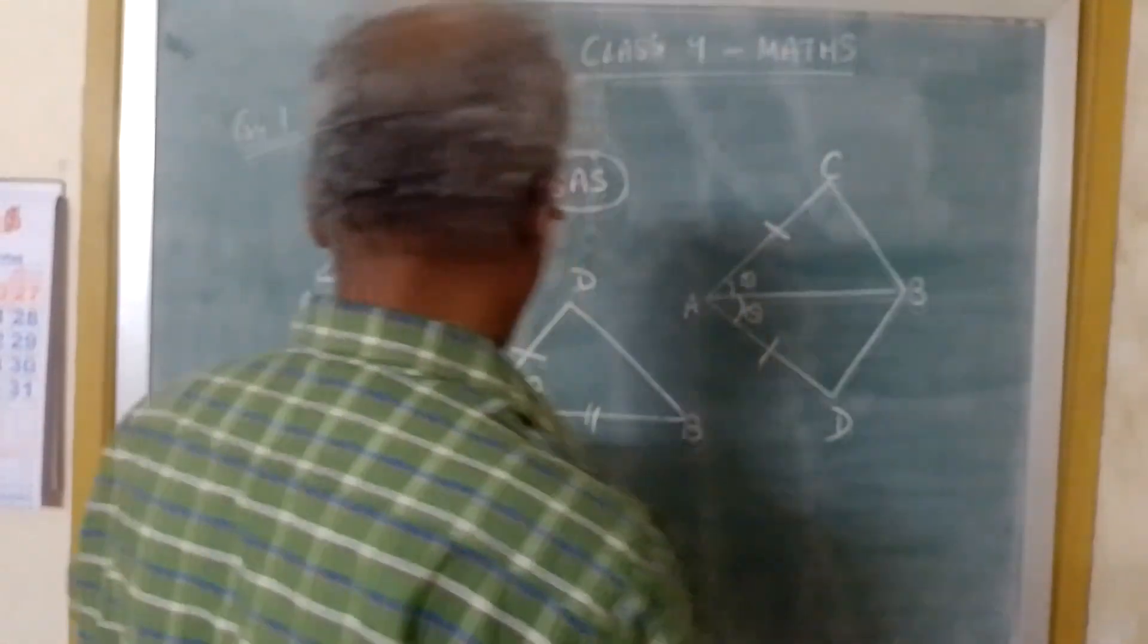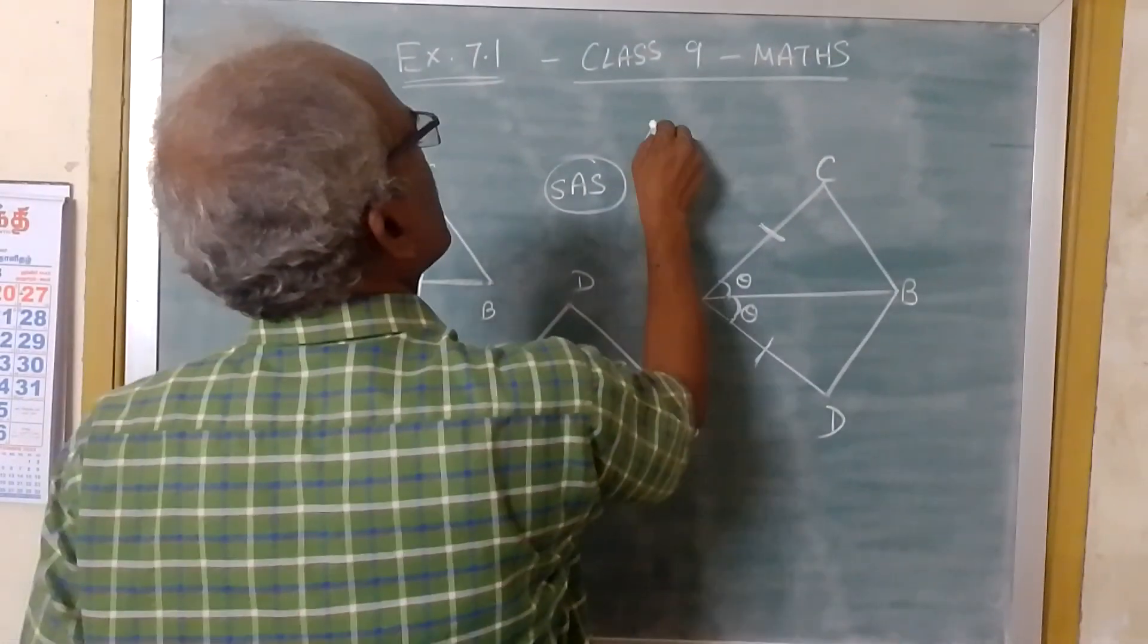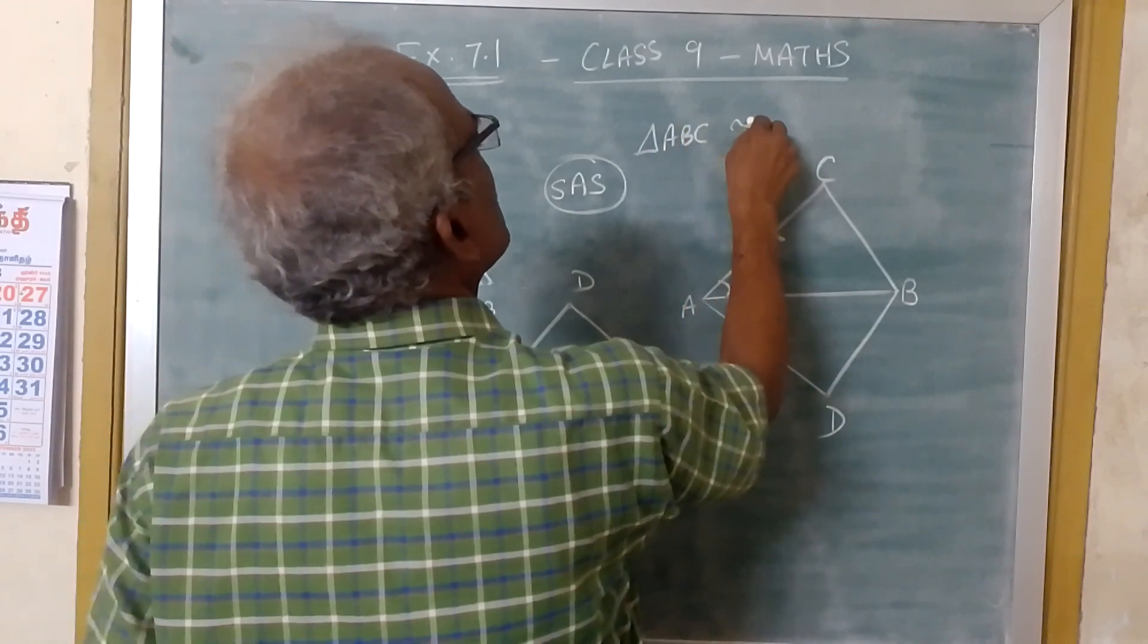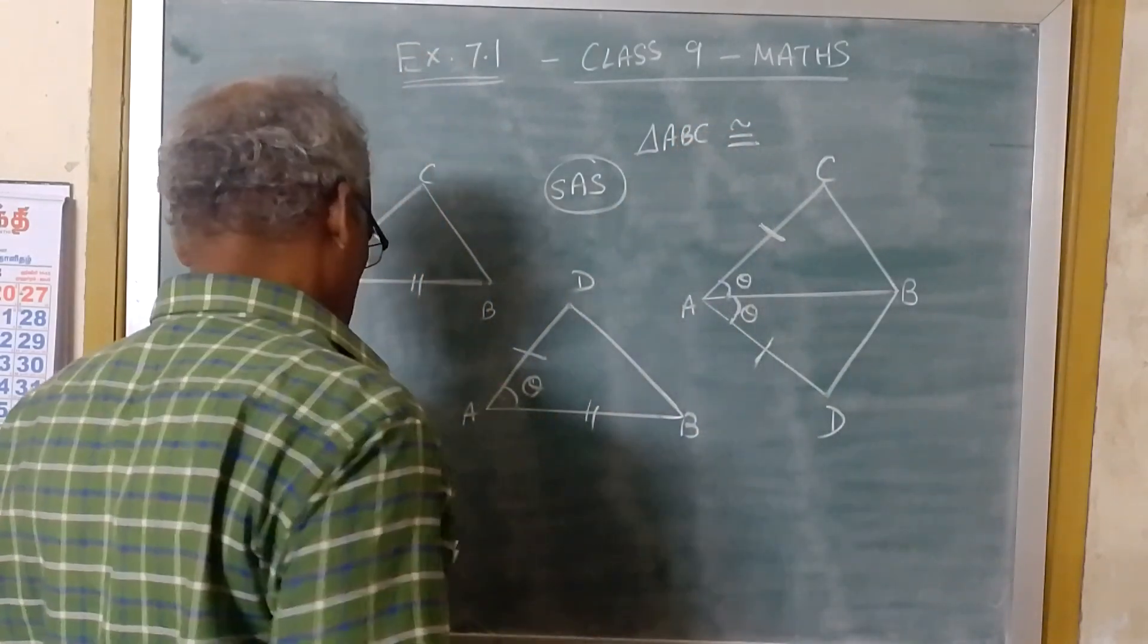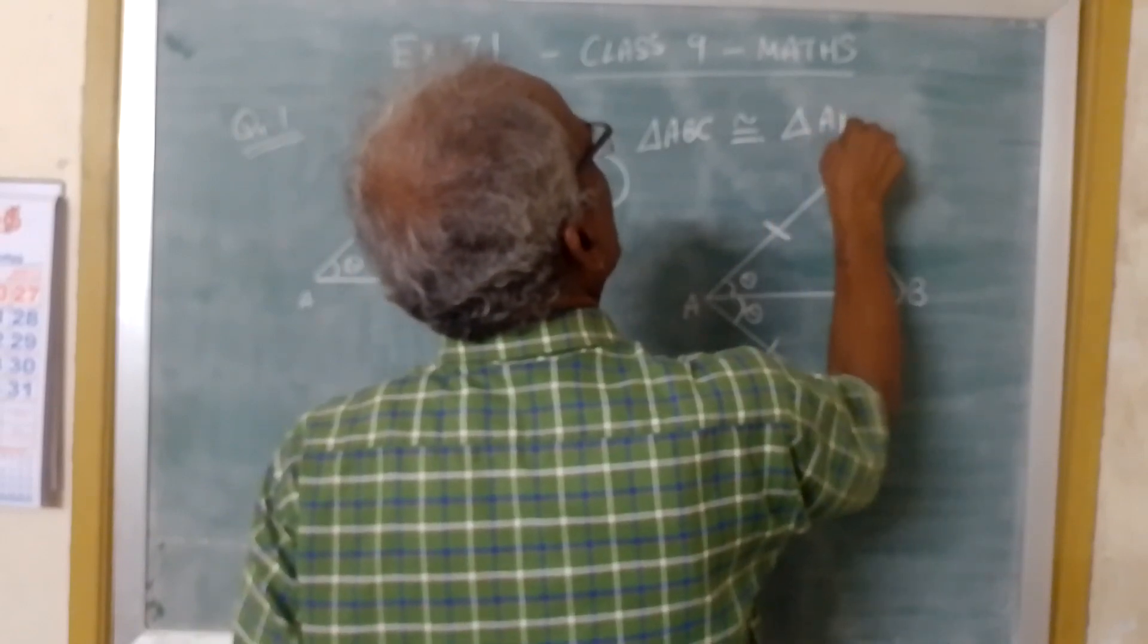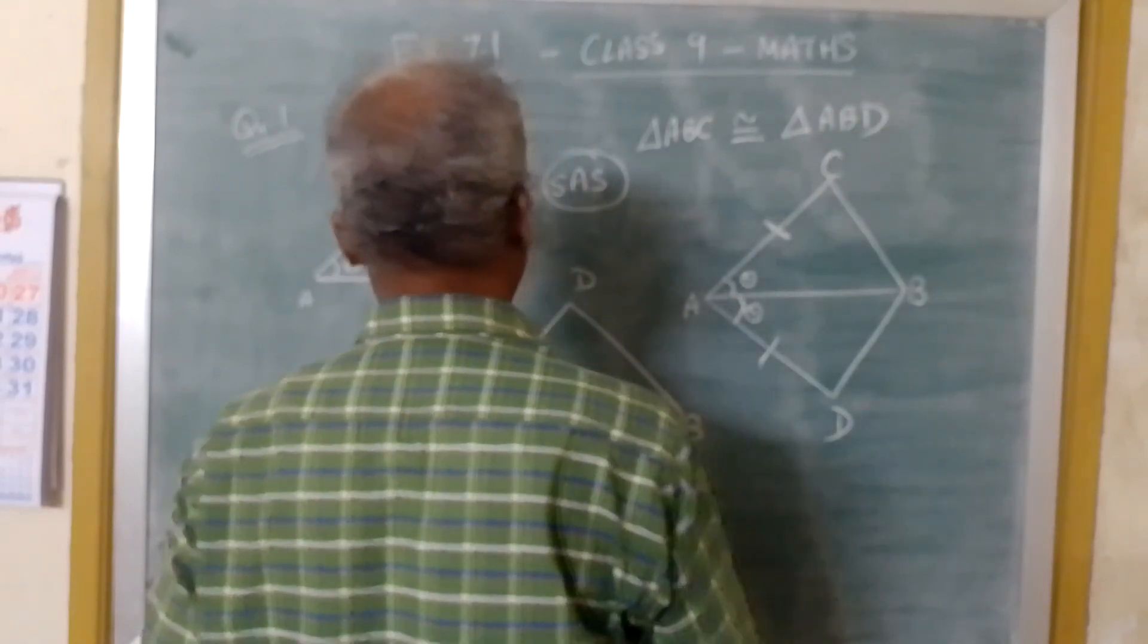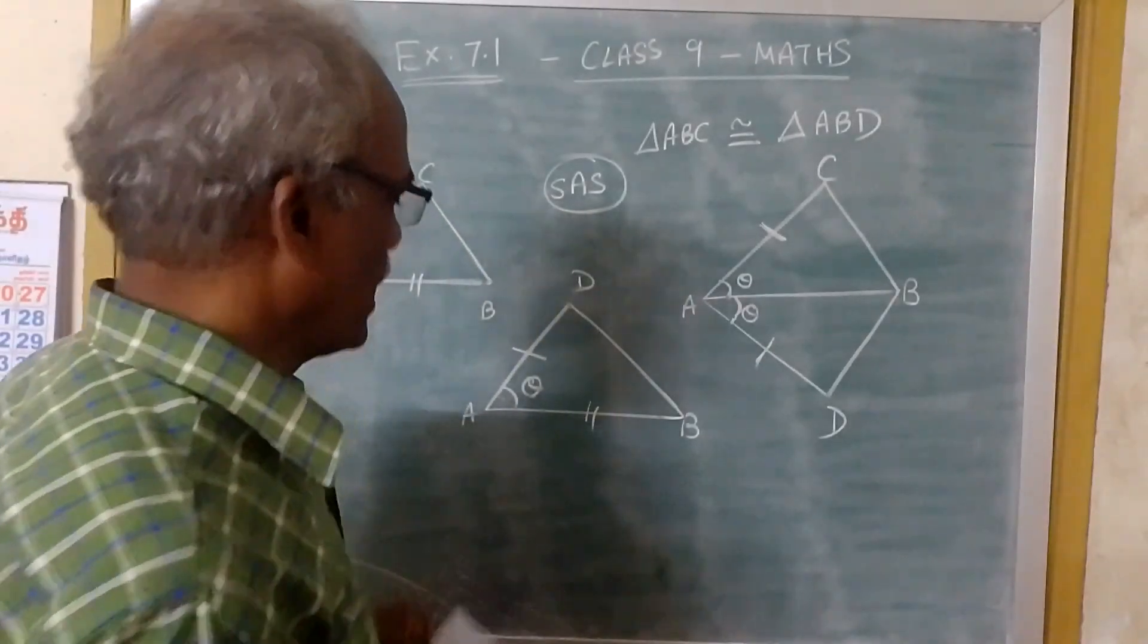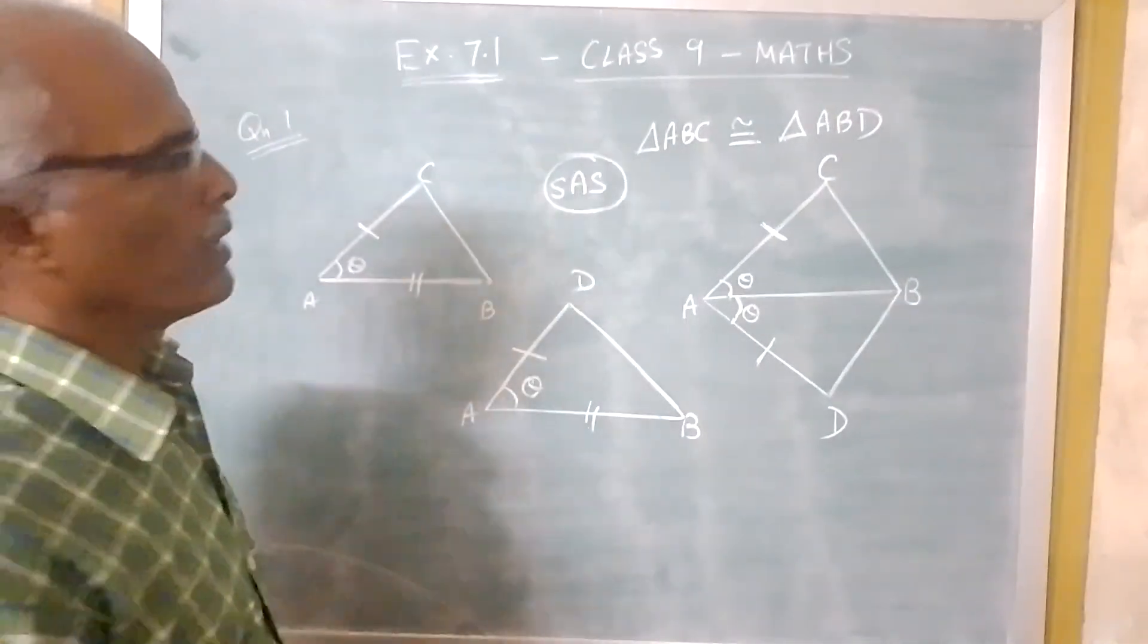That is, we can write triangle ABC is congruent to triangle ABD by SAS rule.